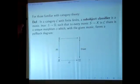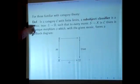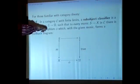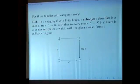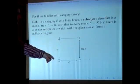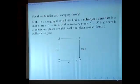A monic is something which generalizes an injective function to categories. True, going from the terminal object - so we do need a terminal object in the category, which is always denoted by 1 - to omega, such that to every monic, this is m here, S to X, there is a unique morphism phi which, with a given monic, forms a pullback diagram. A lot of abstract stuff. What does it mean, basically?